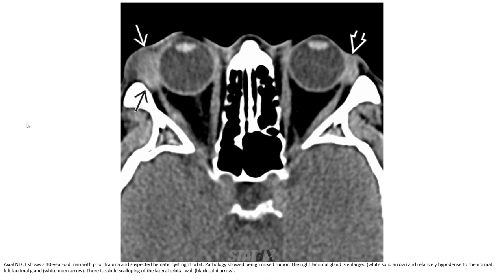The benign mixed tumor of the lacrimal gland is indicated by the white arrow, appearing relatively hypodense to the normal lacrimal gland. There is subtle scalloping of the lateral orbital wall, indicated by the arrowhead.